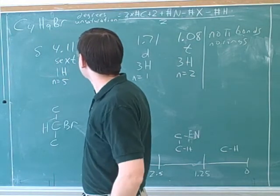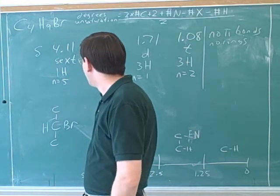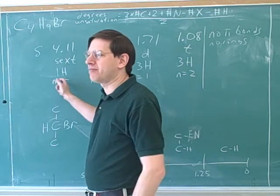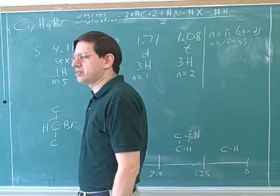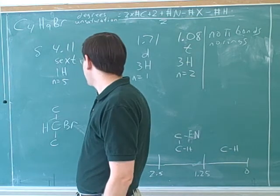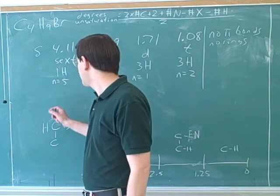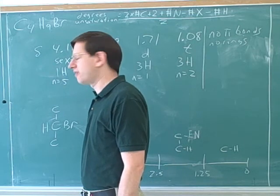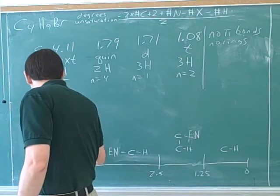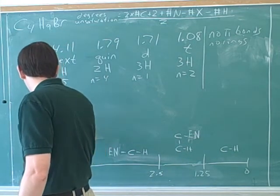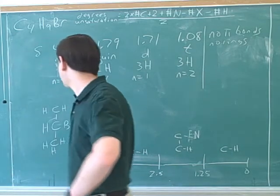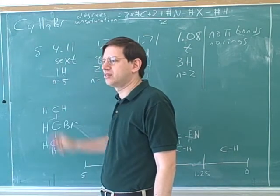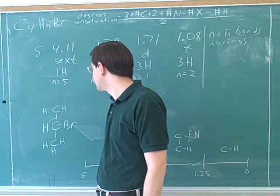In a sense we're already close to done. n equals 5, which means there should be five adjacent hydrogens. The only way for that to happen is if there are three hydrogens on one of the carbons and two hydrogens on the other carbon. So I can put three hydrogens on this carbon and two hydrogens on this carbon. That's really the only way to get five adjacent hydrogens.